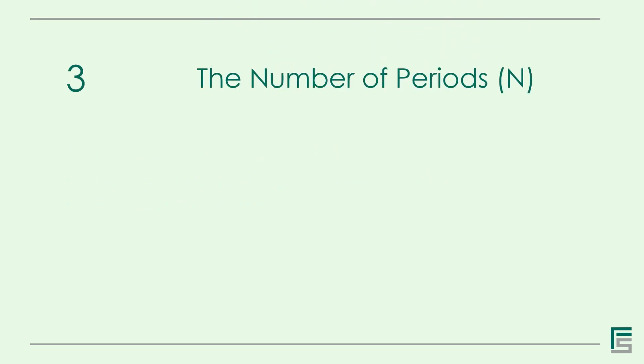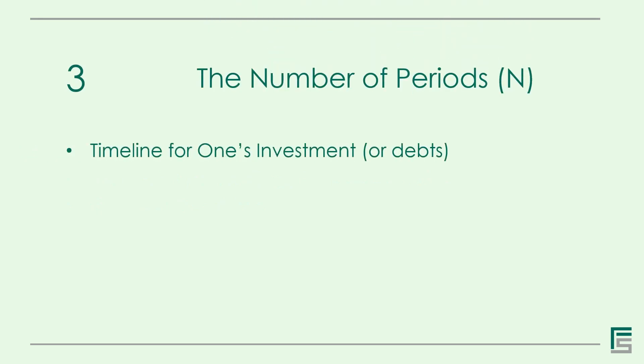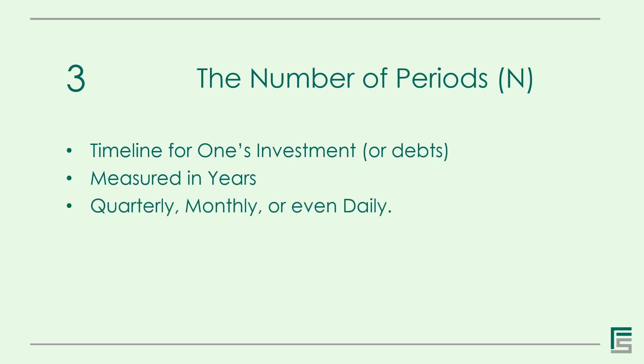The third variable is the Number of Periods. This is the timeline for one's investment. It is usually measured in years, but it could be done in any scale of time such as quarterly, monthly, or even daily.